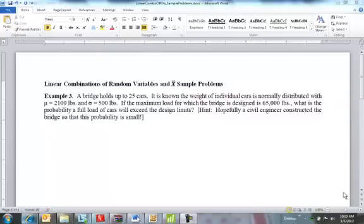Hi, I told you I would make a video for linear combinations of random variables, just in case the solutions I sent you needed more explanation. Here is one of the problems, the last one on that set. A bridge holds up to 25 cars. The weight of the cars are individually normally distributed with mean 2100 and standard deviation 500.